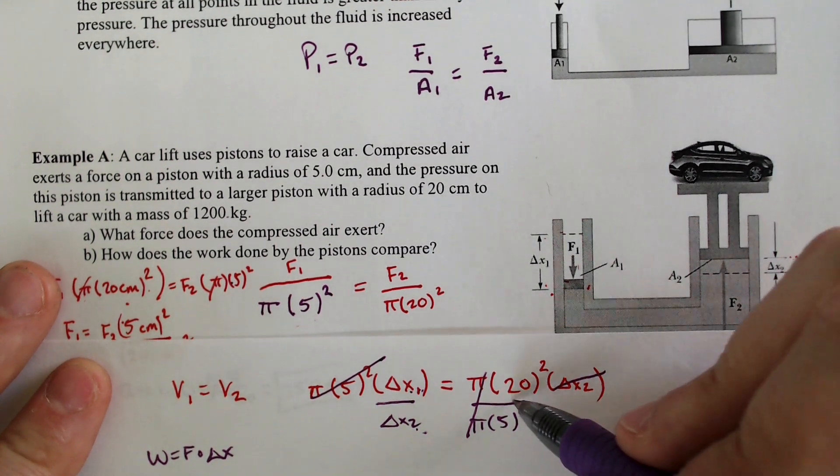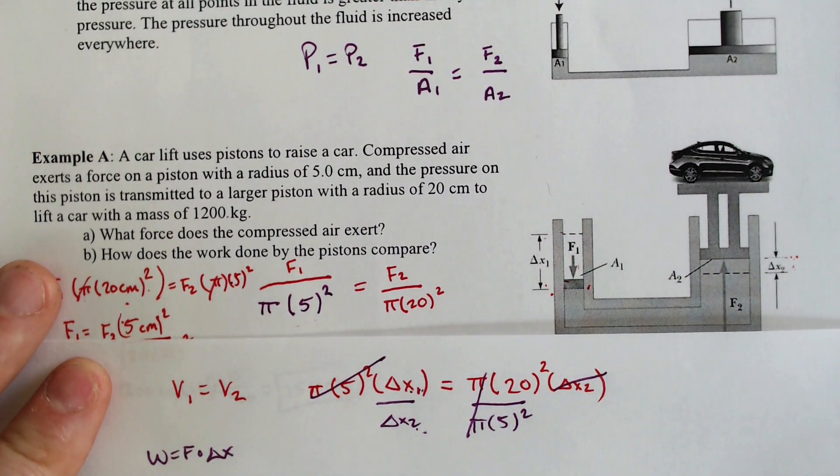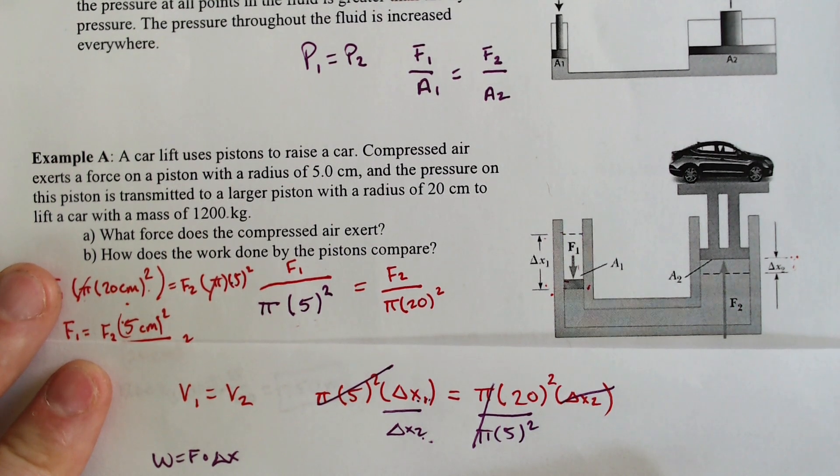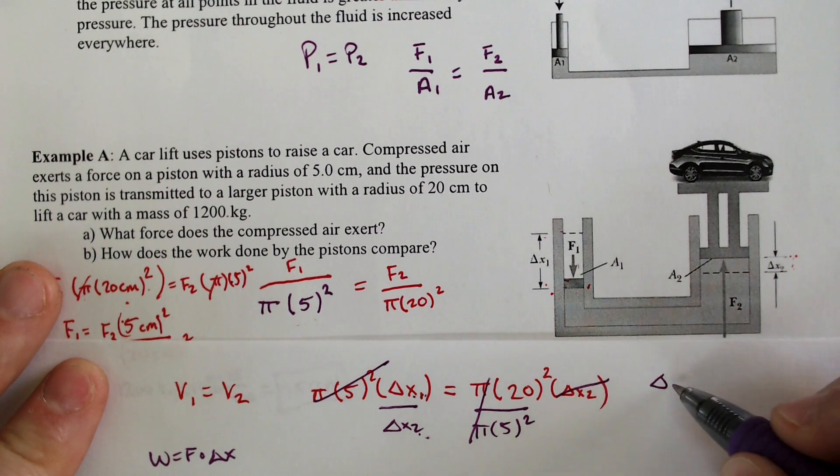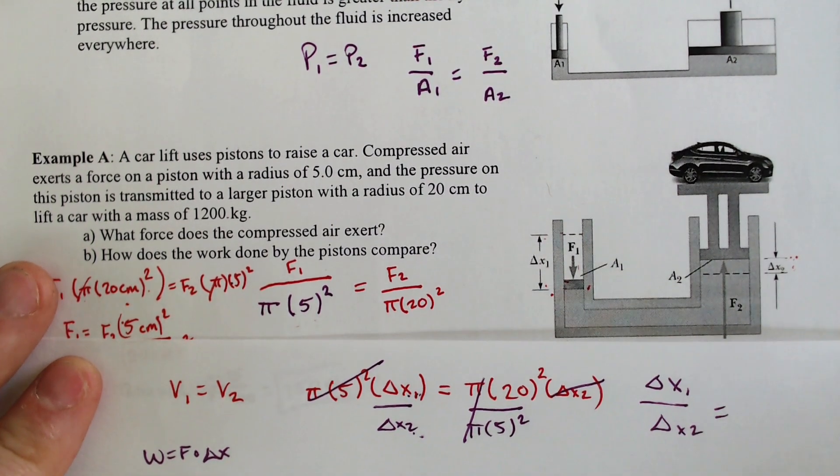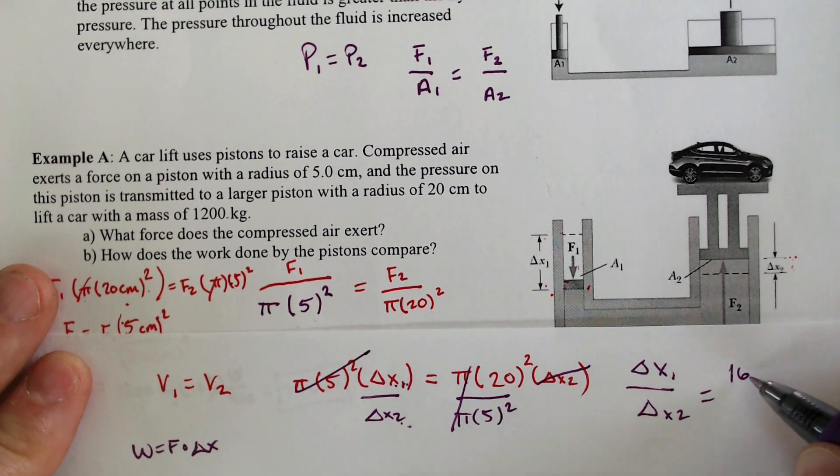So the pi's are going to cancel. And if we do 20 squared divided by 5 squared, you get a number. 20 squared, 400 divided by 25 is 16. So that means the delta x1 divided by delta x2, the change in displacements, will equal 16 over 1.